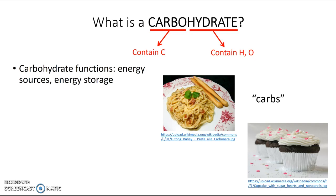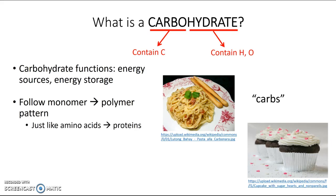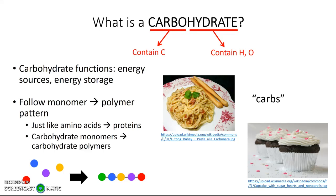Like the proteins that we saw before, carbohydrates follow this monomer-polymer pattern. Just like you could take amino acid monomers and link them together to form protein polymers, you can also take carbohydrate monomers and link them together to form carbohydrate polymers. So let's start by learning about the monomers of carbohydrates.